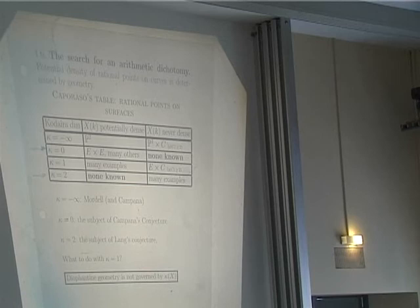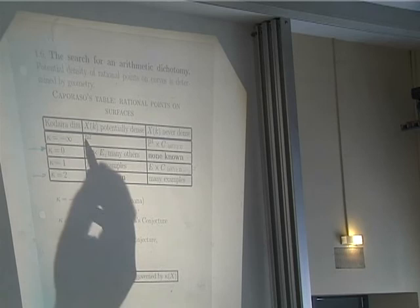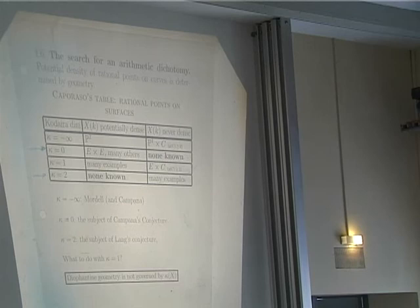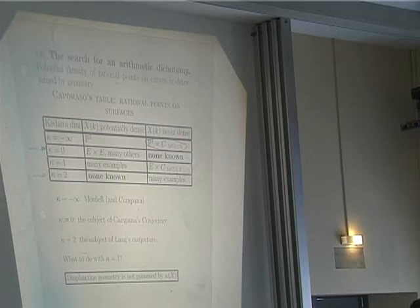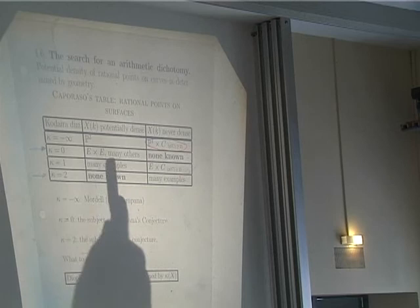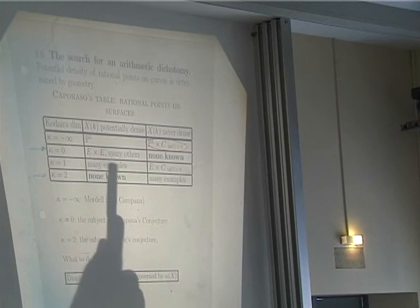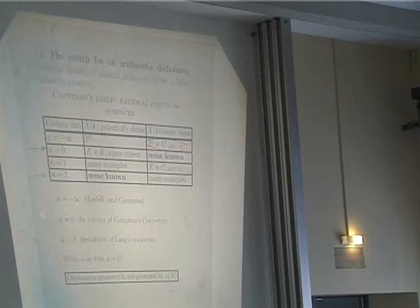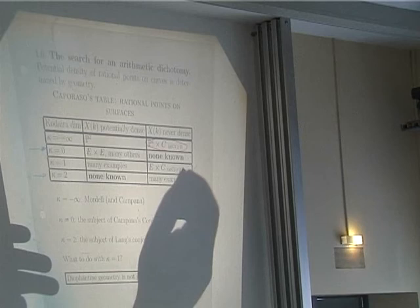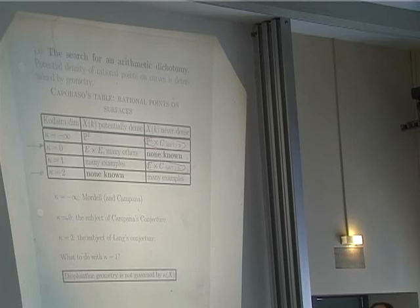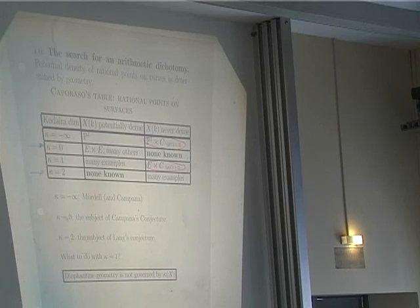In the Kodaira dimension minus infinity case, we have a complete dichotomy just like for curves. If you have a rational surface, it has many rational points. If you have something birational to P1 cross a curve of genus bigger than one, then rational points cannot be dense because they must map to rational points on the curve. We have a similar case for Kodaira dimension one: there are many examples of surfaces of Kodaira dimension one which have potentially dense rational points, and also examples which do not because they map to curves of genus bigger than one. Kodaira dimension alone is not good enough — you can have the same Kodaira dimension but very different arithmetic behavior.